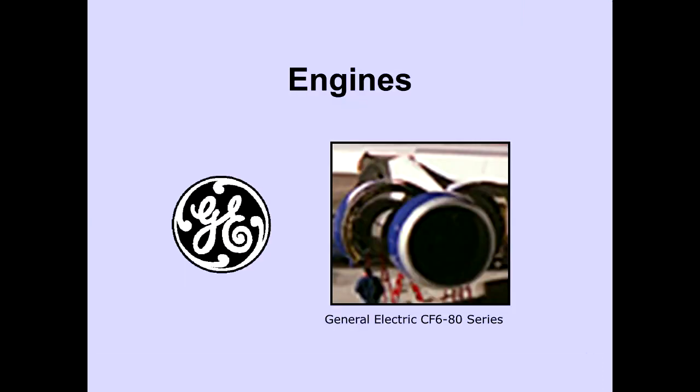The four engines are General Electric CF-6-80 series. Atlas aircraft are equipped with CF-6-80-C2-B5-F engines with equivalent thrust rated at 62,100 pounds each.